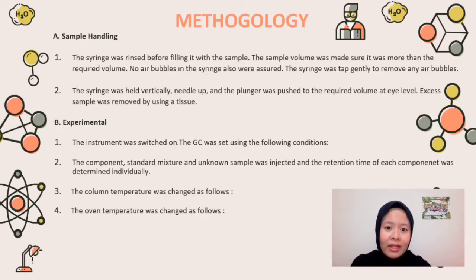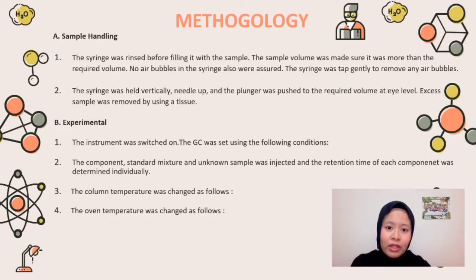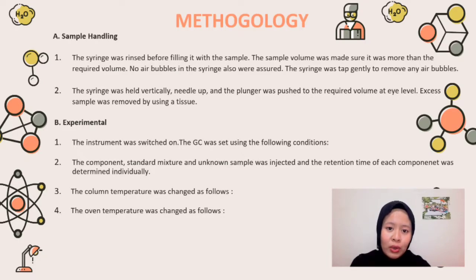The first part is sample handling. Step 1: The syringe was rinsed before being filled with the sample. The sample volume was made sure to be more than the required volume. The syringe was tapped gently to remove any air bubbles. Step 2: The syringe was held vertically, needle up, and the plunger was pushed to the required volume at eye level. Excess sample was removed by using a tissue.